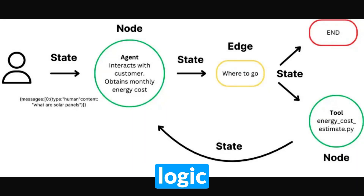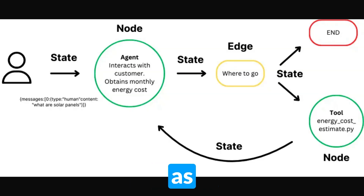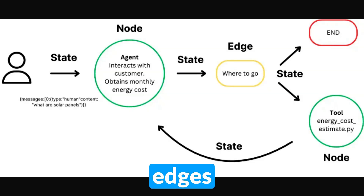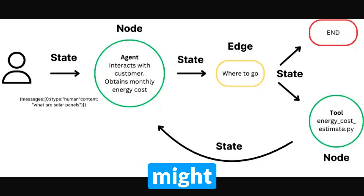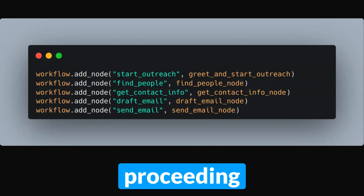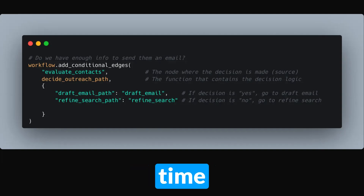Next, we have to define the graph's logic using edges. Edges define the flow of execution between nodes — think of them as arrows on a flowchart. An edge simply says: once this node is done, send the state to the next node. You have to define all the possible routes your agent might take. You can have direct edges, which represent a path always taken when the preceding node finishes, and conditional edges, which represent mutually exclusive paths where only one is taken based on decision logic often powered by the LLM.